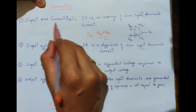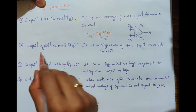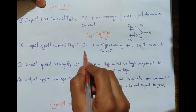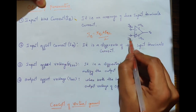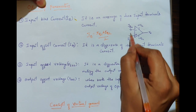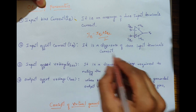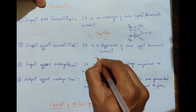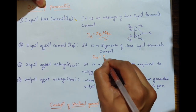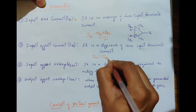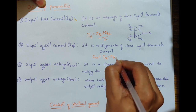Next is input offset current. Input offset current is the difference of the two input terminal currents, that is, input offset current equals IB1 minus IB2.